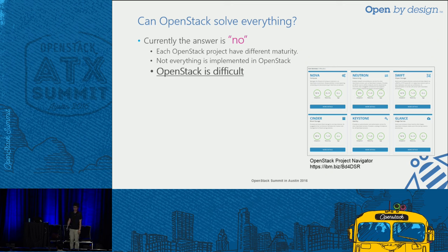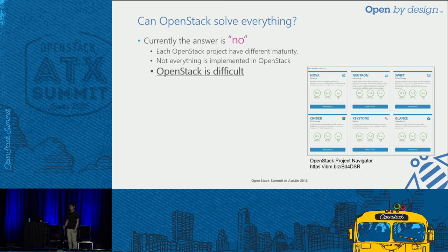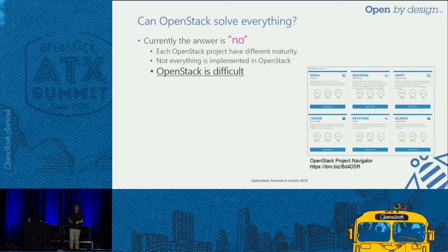So can OpenStack solve everything? The answer is probably no, and for a long time I believe it will remain no. Why? Because each project has different maturities. The community now provides the OpenStack Project Navigator, and when we look at it, we realize that projects with high maturity are mostly the core services. Big tent projects like Horizon and Heat have high maturity, but all the other projects are still in the progress of development. Also, not everything is implemented in OpenStack.